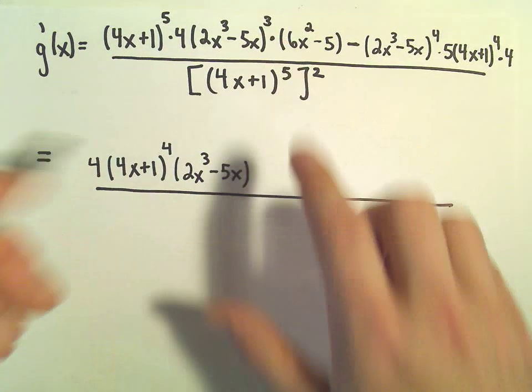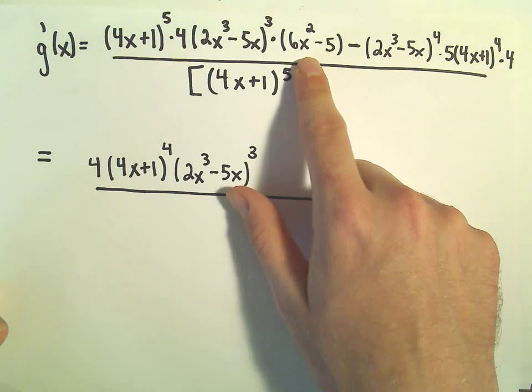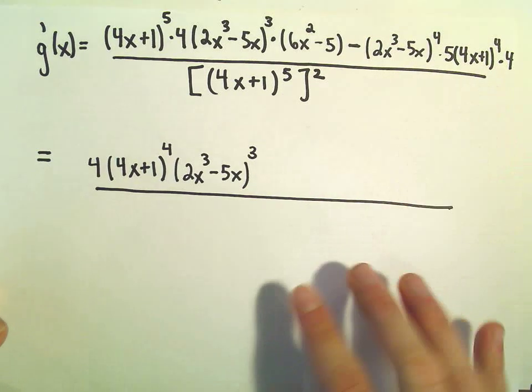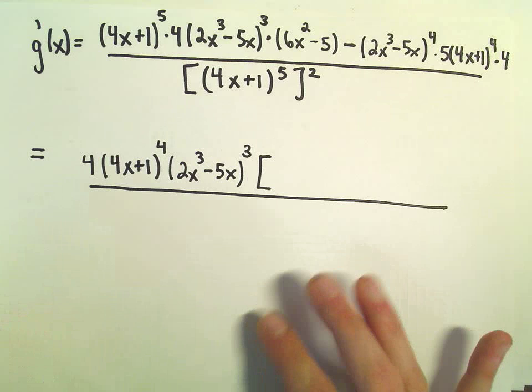Pull out the smaller exponent, which would be to the 3rd power. And then I see a 6x squared minus 5 in parentheses, but the other factor doesn't have that. So I think that's what we'll factor out.